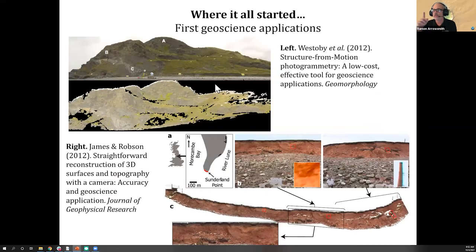When we go into geoscience, it's important to cite these papers. I always remind myself - I got to remember to cite Westoby et al. 2012 and James and Robson 2012. These two papers came out the same year and were ones where they were clearly adapting structure from motion to geoscience applications. Westoby et al. says structure from motion photogrammetry: a low cost effective tool for geoscience applications, published in the journal Geomorphology. James and Robson: straightforward reconstruction of 3D surfaces and topography with a camera - accuracy and geoscience application, JGR. These are good papers, although things have moved on since then, but that's where they kind of started, basically 10 years ago.